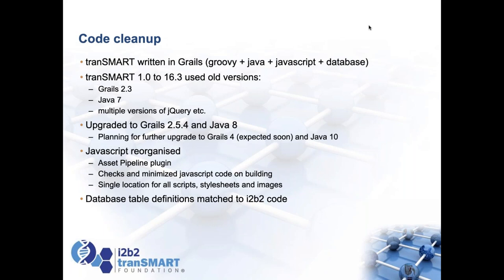All the JavaScript code is reorganized using the asset pipeline plugin, which puts everything in one place — standardizing a single location for all scripts, style sheets, and images. We're doing a lot of testing to make sure everything is in the right place and still presents correctly. The database table definitions have been compared to the i2b2 database, so the database is now compatible with i2b2 — you could in theory load a TranSMART database and run i2b2 on it, since you'll have all the i2b2 tables plus some extra TranSMART-specific tables.